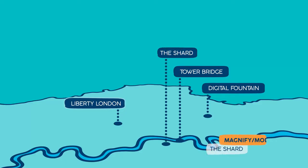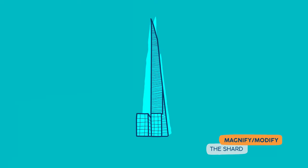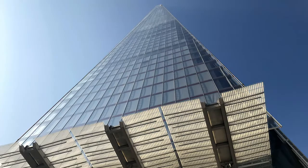Modification is implicitly used in the Shard Building in London, which rises into the sky like a glass pyramid. It mirrors the light which modifies your view, depending on the direction from which you approach it or the position of the sun.